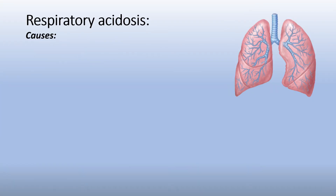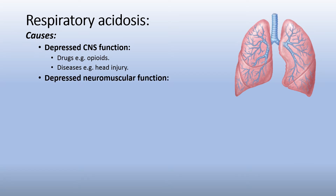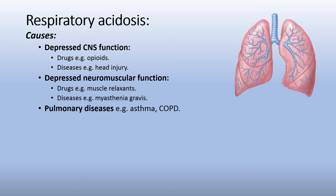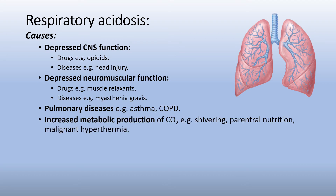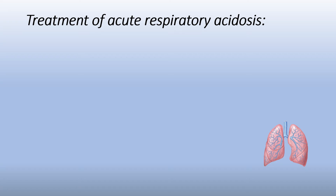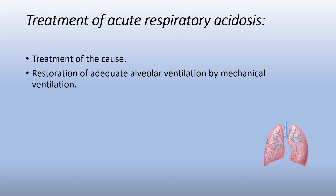Respiratory acidosis causes include depression of CNS function, either by drugs such as opioids or by diseases such as head injury. Depressed neuromuscular function, for example, drugs such as muscle relaxants or diseases such as myasthenia gravis. Pulmonary disease such as asthma or COPD. Increased metabolic production of carbon dioxide, for example, shivering or malignant hyperthermia. Treatment of acute respiratory acidosis: treat the cause first, and restore adequate alveolar ventilation by mechanical ventilation if needed.